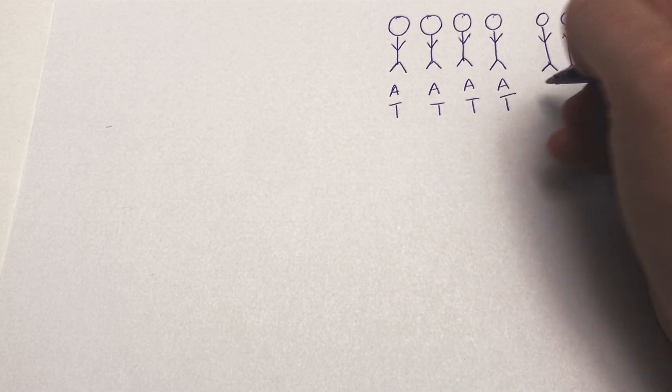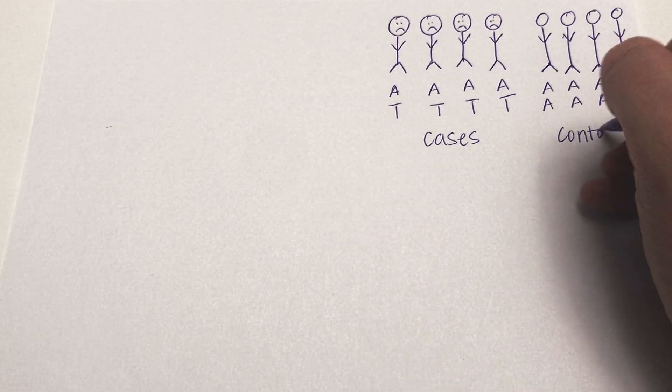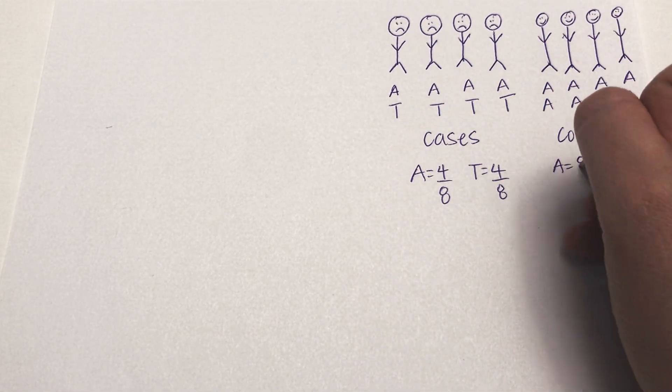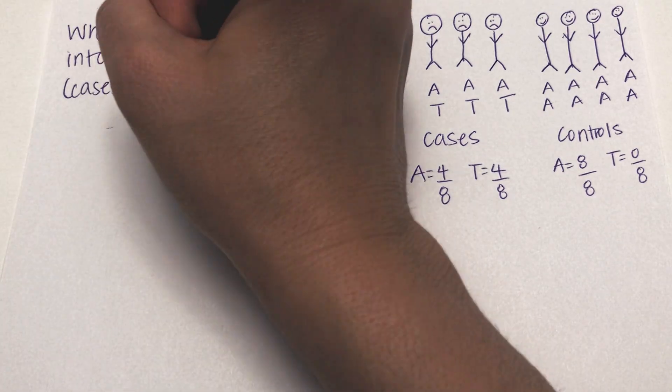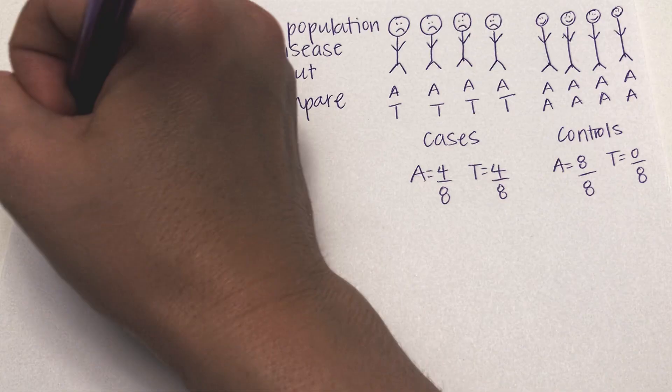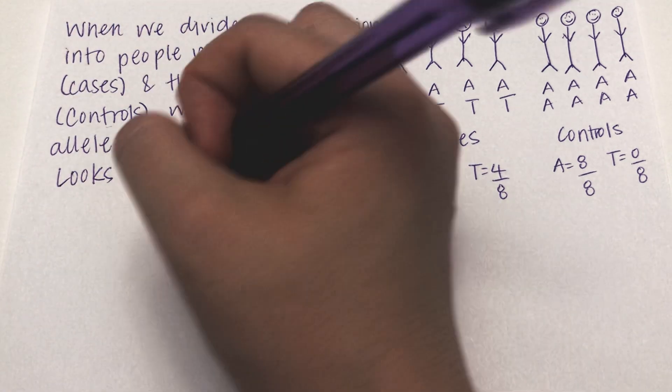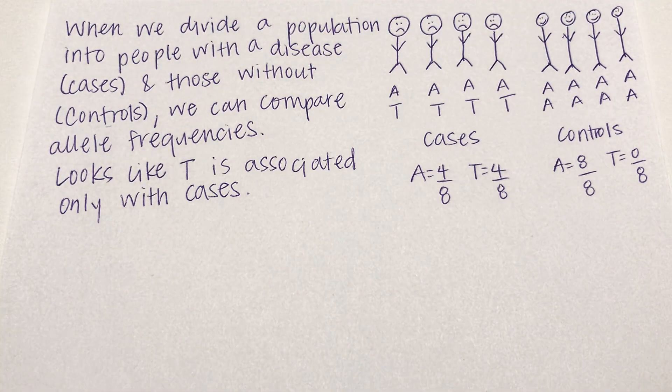When we divide a population into people with a disease, cases, and those without disease, controls, we can compare allele frequencies between the two groups. It looks like T is associated only with cases at this SNP and in this population.